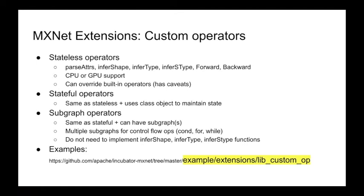The other category of custom operators in MXNet are stateful operators. Similar to stateless, but they give you the ability to maintain state either between multiple forward calls or between the forward and backward call. You can do things like batch norm where you want to compute a running average between each forward call. The next category are subgraph operators — similar to stateful operators but they can also have a subgraph, which is just a portion of an MXNet model with operators and data dependencies. You can use these for control flow like conditional if-else or loops, or to execute operators outside of MXNet using libraries like MKL-DNN or TensorRT.